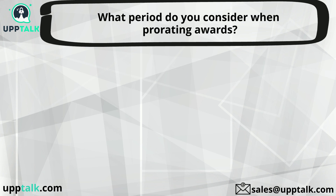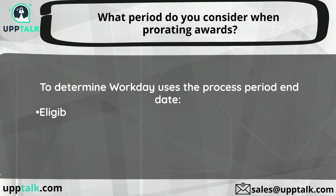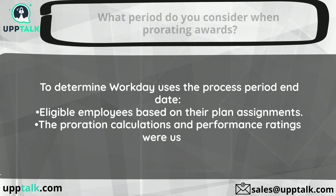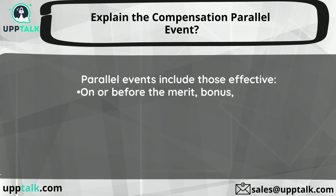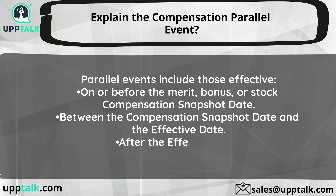What period do you consider when prorating awards? Workday uses the process period end date to determine eligible employees based on their plan assignments. The proration calculations and performance ratings are used. Parallel events include those effective on or before the merit, bonus, or stock compensation snapshot date, between the compensation snapshot date and the effective date, and after the effective date.